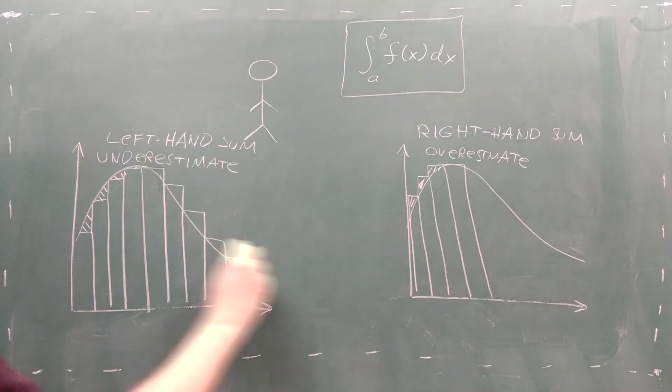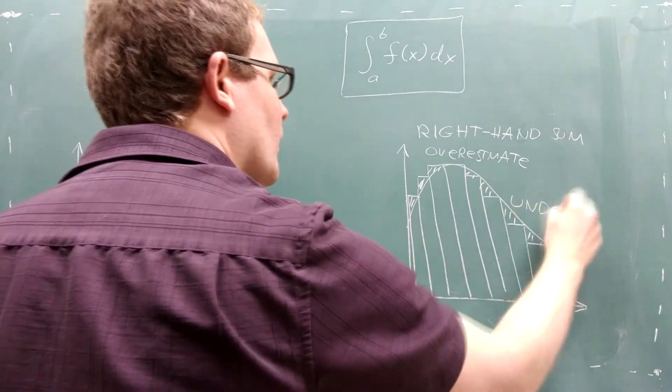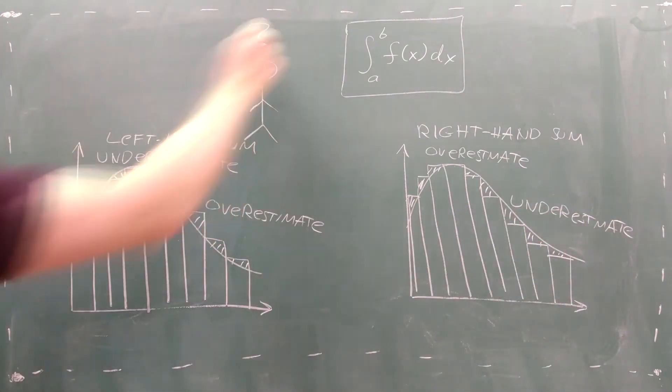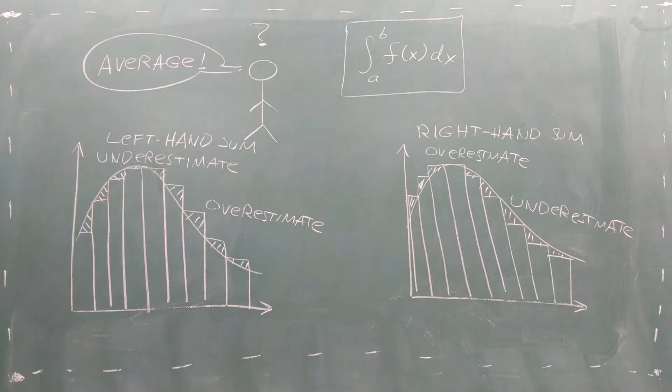Similarly, if your function is decreasing, the left-hand sum will overestimate the integral, and the right-hand sum will underestimate the integral. Now, when you have an overestimate and an underestimate, the solution seems pretty simple: take the average of the two.